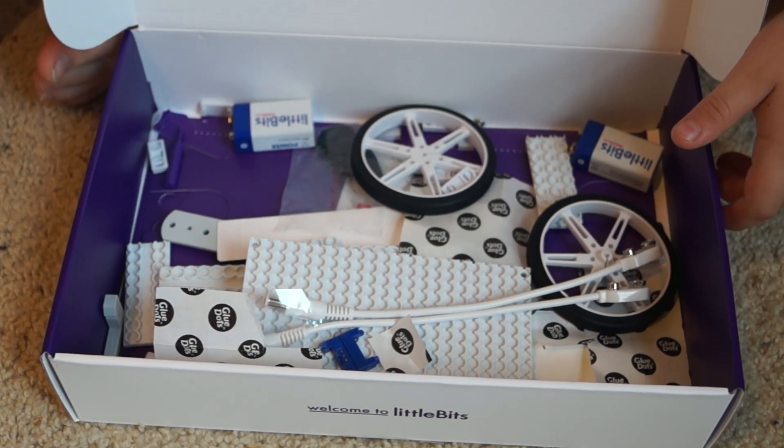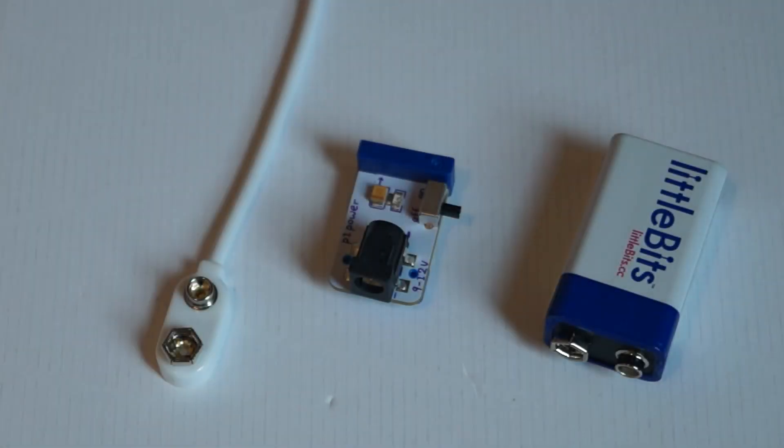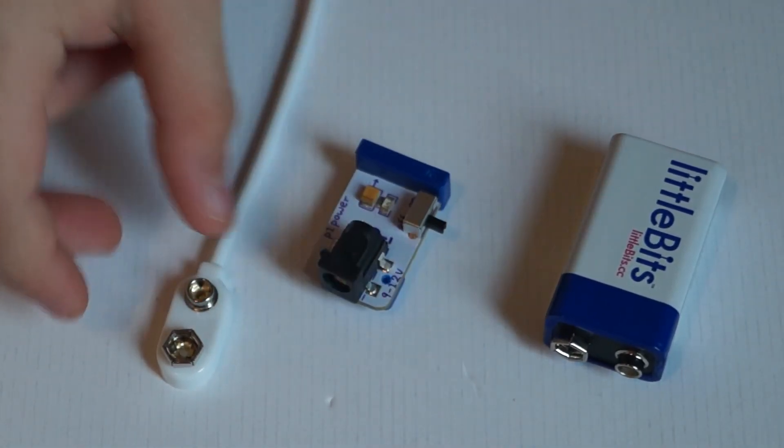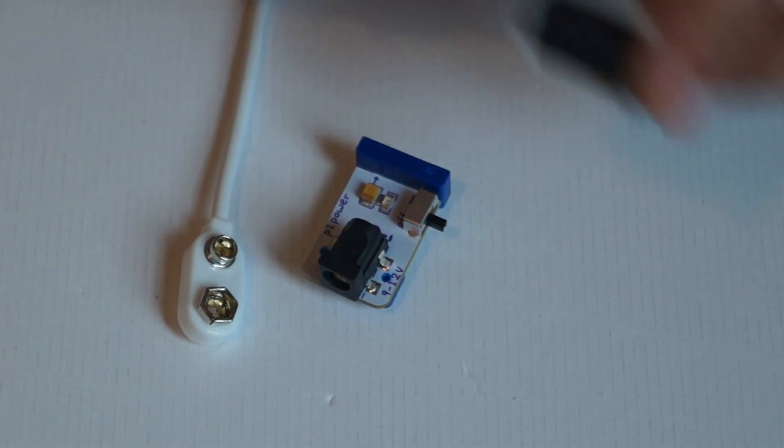So let's explain the individual parts in it for the Little Bits. This is the power bit. This thing here, that's the power bit. This is a connector for it, and this is the Little Bits battery.